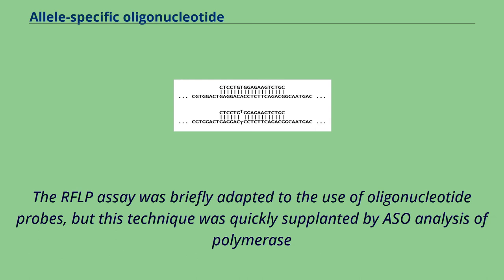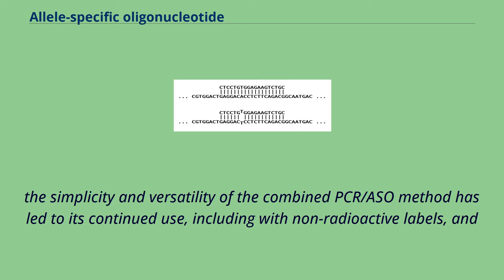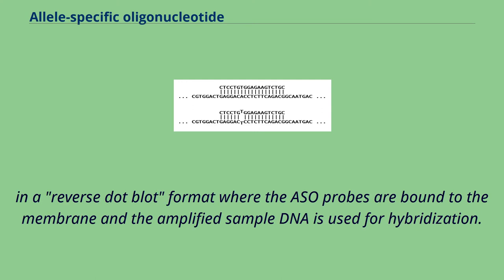The RFLP assay was briefly adapted to the use of oligonucleotide probes, but this technique was quickly supplanted by ASO analysis of polymerase chain reaction amplified DNA. The PCR technique itself has been adapted to detect polymorphisms as allele-specific PCR. However, the simplicity and versatility of the combined PCR-ASO method has led to its continued use, including with non-radioactive labels and in a reverse dot blot format where the ASO probes are bound to the membrane and the amplified sample DNA is used for hybridization.